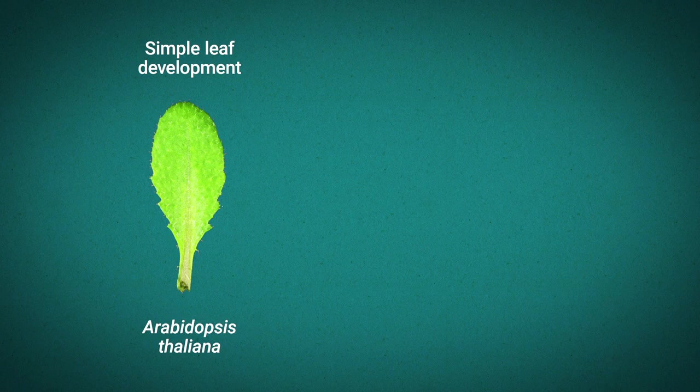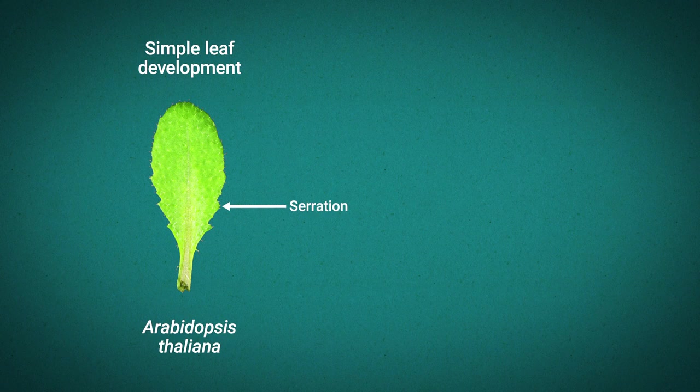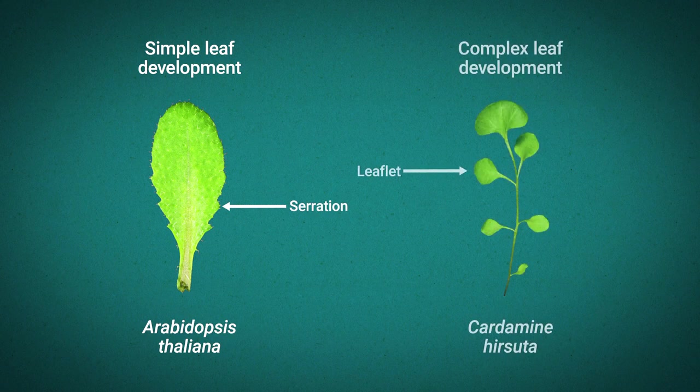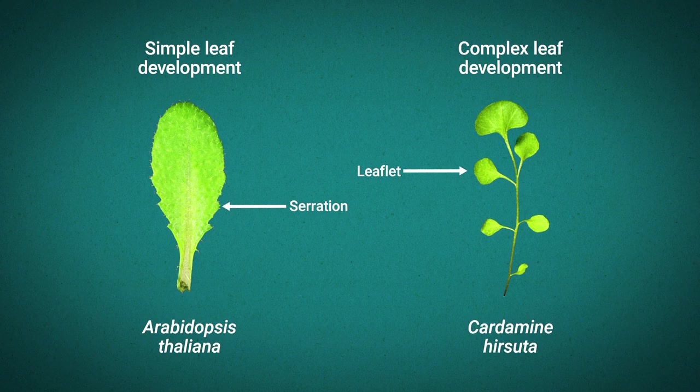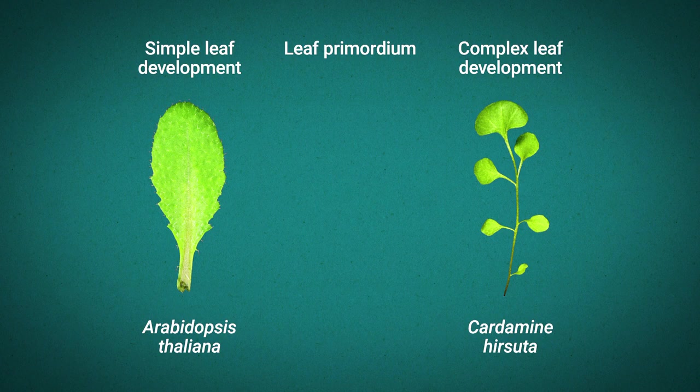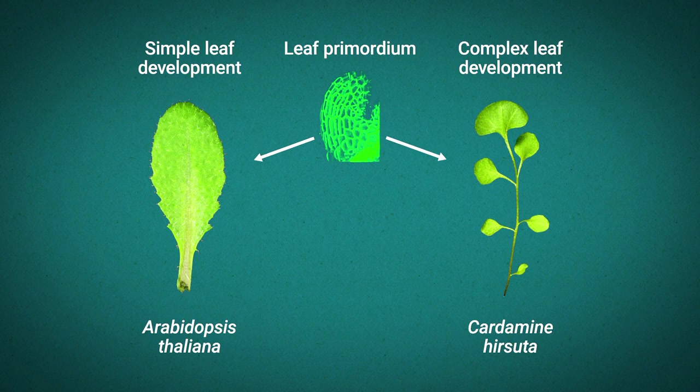Leaves can be simple in shape as in Arabidopsis thaliana which has leaves with small outgrowths called serrations, or complex and divided into distinct leaflets as in closely related Cardamine hirsuta. Leaves in both of these species arise from small buds that are virtually indistinguishable but these grow differently to create different leaf forms.